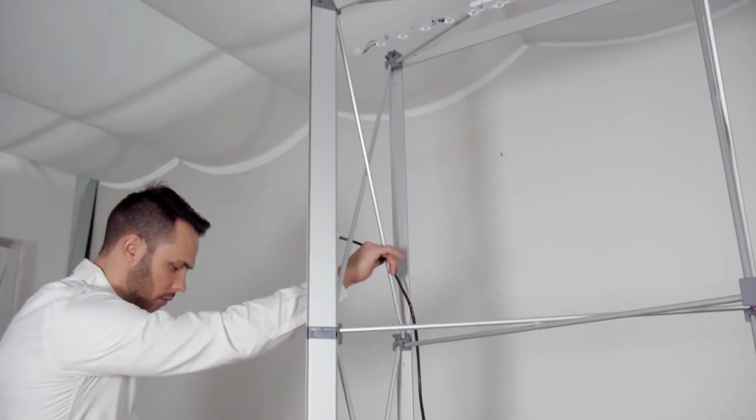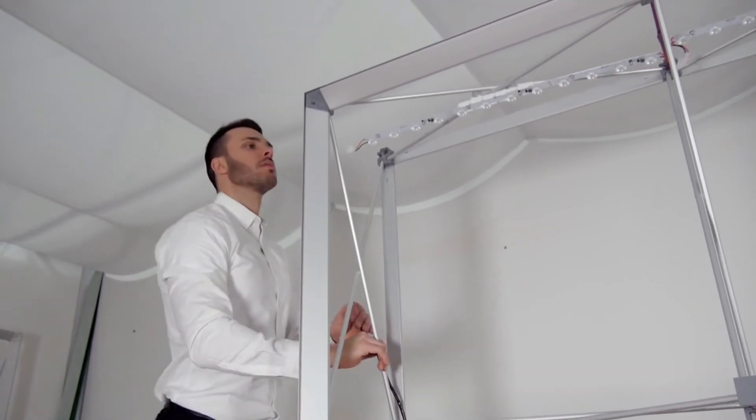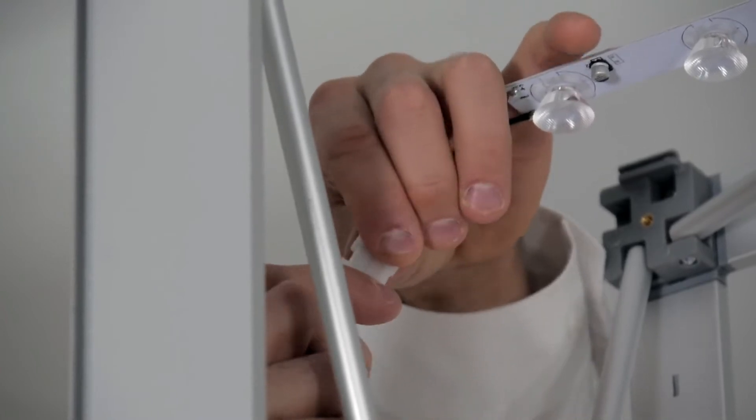Connect the long extension cord to the female end of the top right strips in series. Run the long extension cord down the side.